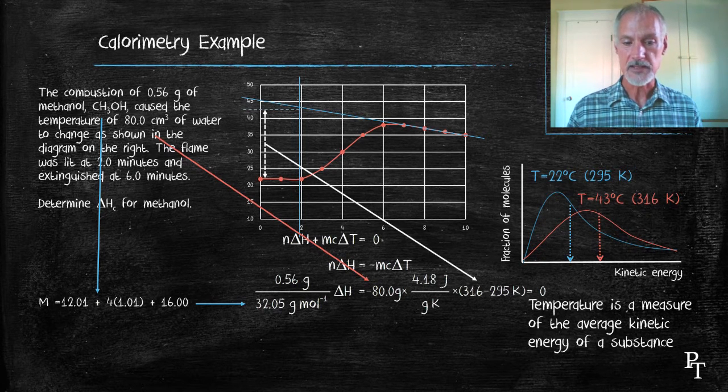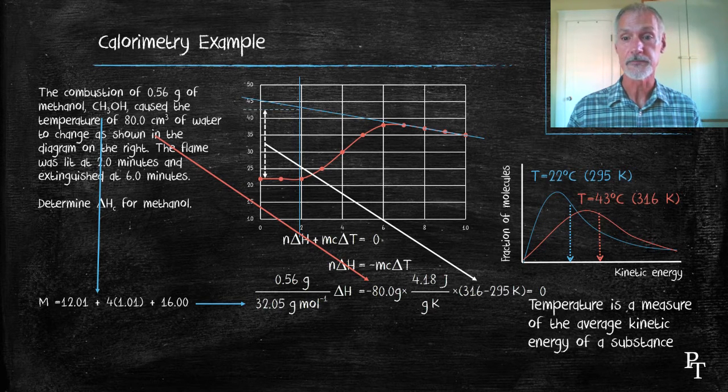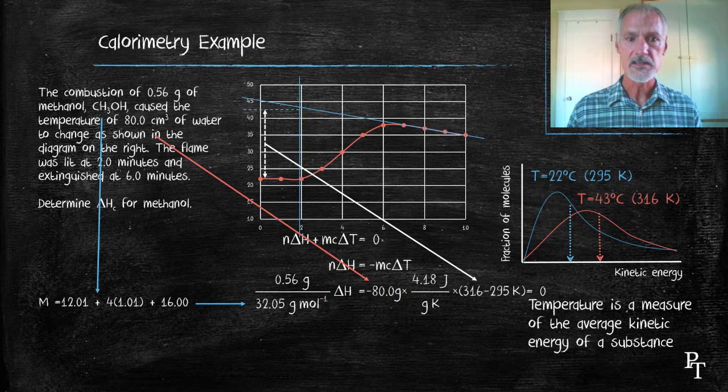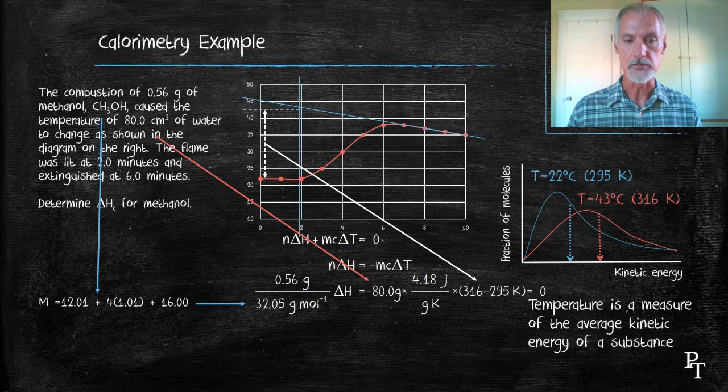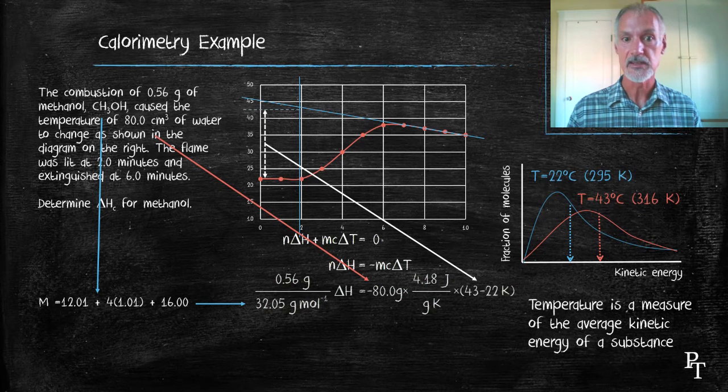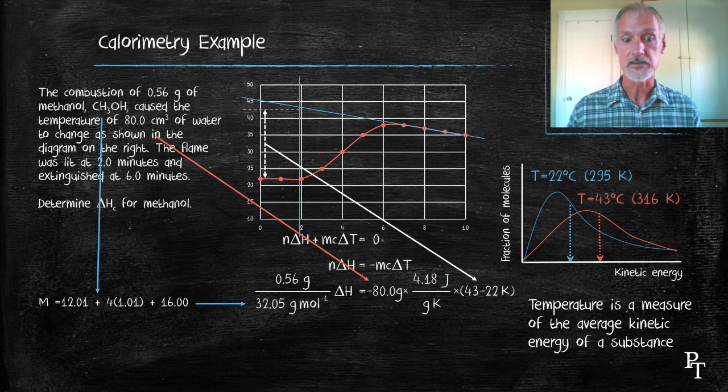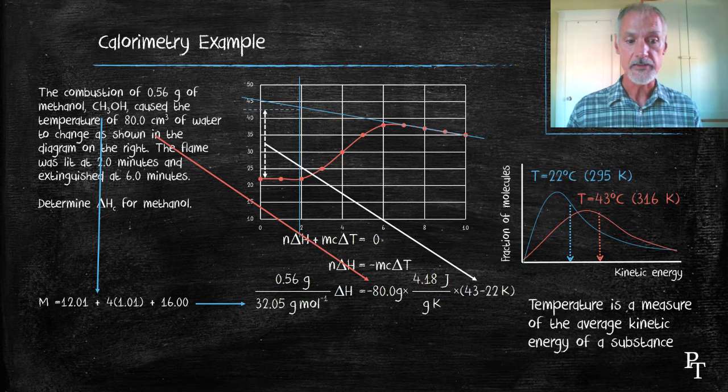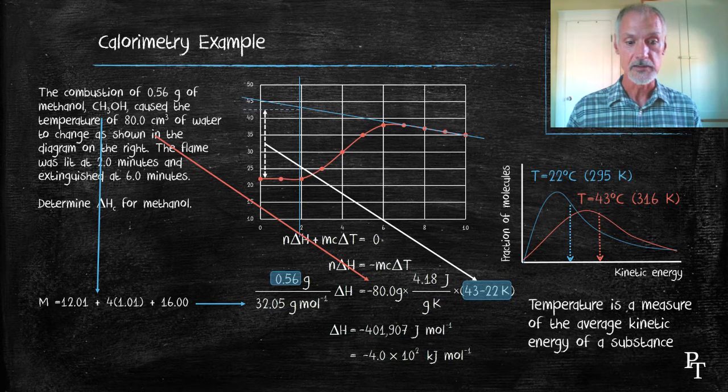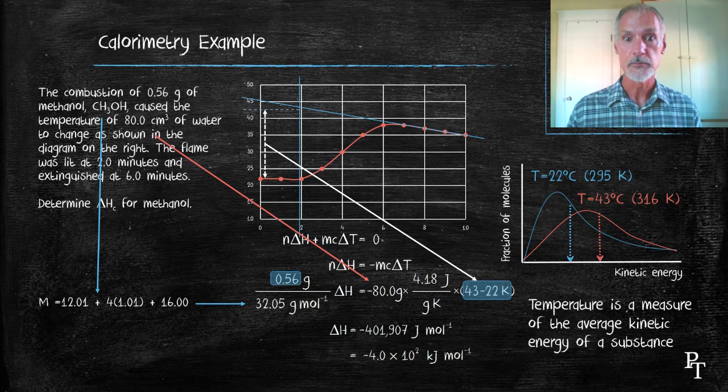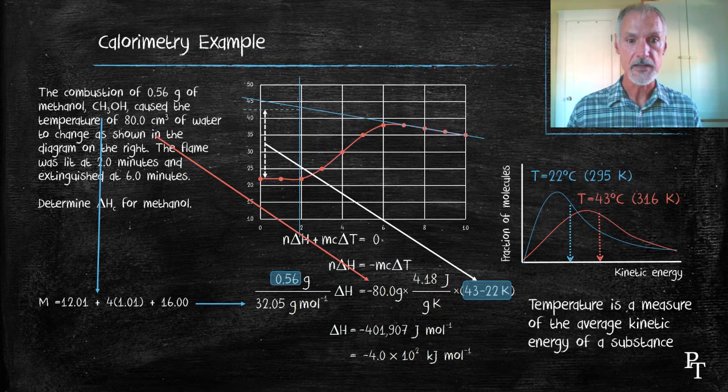Now, I've converted that here into Kelvin simply because my specific heat capacity is measured in Kelvin. But one thing to note: temperature change, whether measured in Celsius or Kelvin, are the same magnitude. So I could simply have left it in Celsius. Rearranging and solving, I get negative 401,900 joules per mole. To convert that into kilojoules, which is the standard unit, I divide by 1,000.